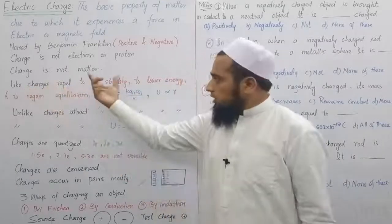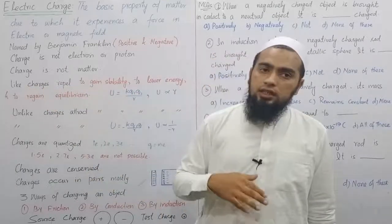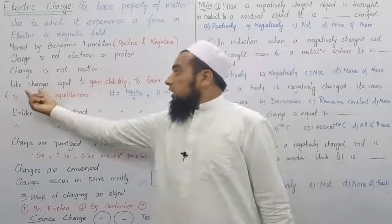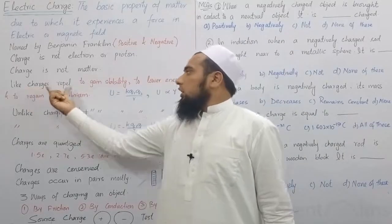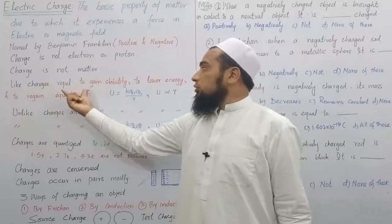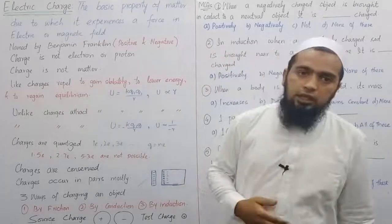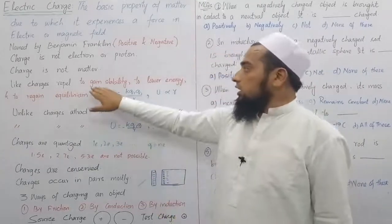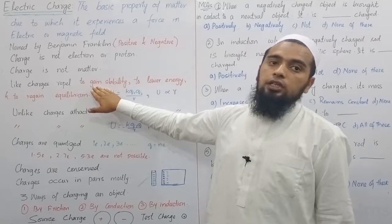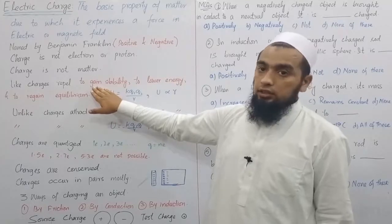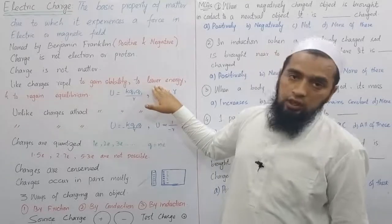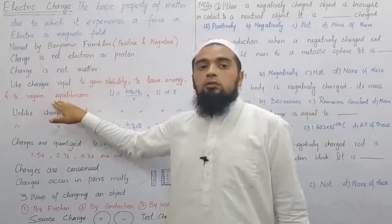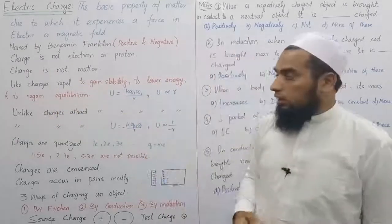Let us discuss some properties of charge so we understand what charge is. One property of charge is that like charges repel each other — positive repels positive, negative repels negative. Why? To gain stability. In nature, everything wants to move toward stability, minimize its energy, and maintain or regain its equilibrium state.